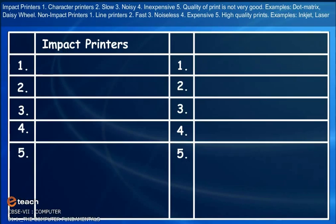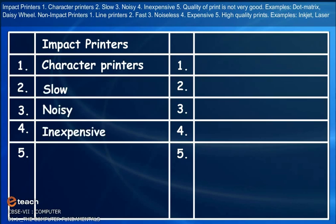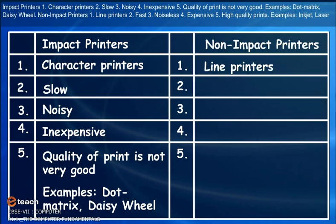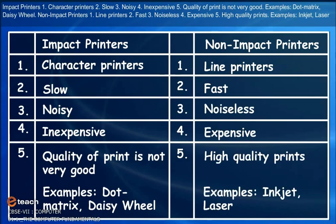Impact printers are character printers. They are slow, noisy, inexpensive, with quality of print that is not very good. Examples include dot matrix and daisy wheel. Non-impact printers are line printers. They are fast, noiseless, expensive, with high quality prints. Examples include inkjet and laser.